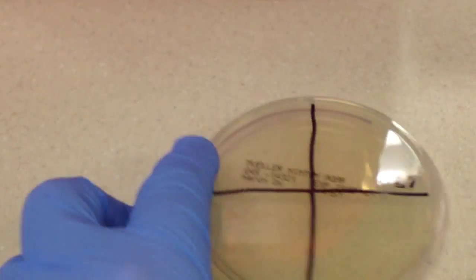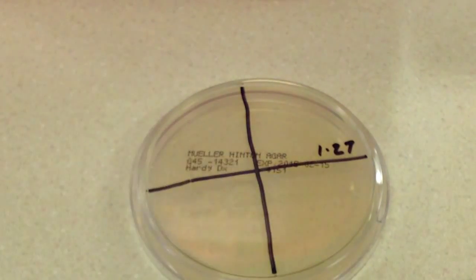Alright, so the first thing I need to do is I need to make a lawn on this Mueller Hinton plate. Now making a lawn for X and V is a little bit different than